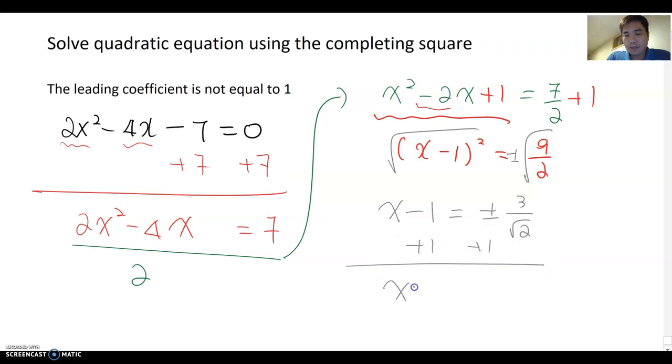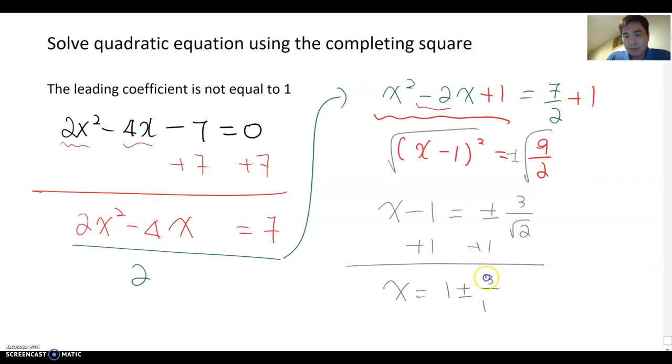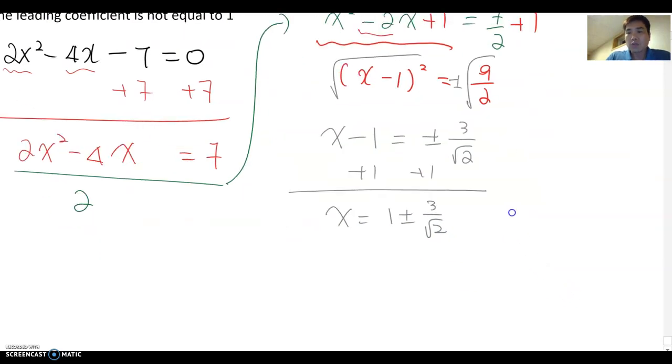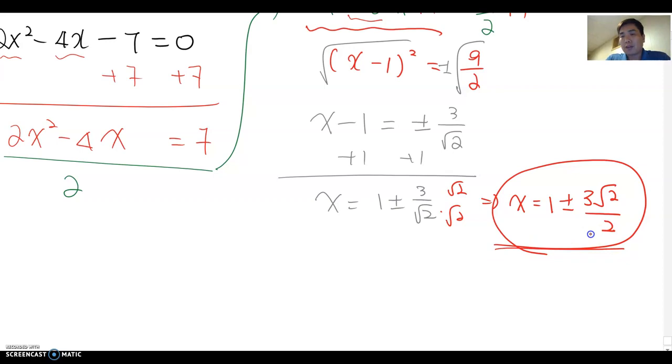Then x equal to 1 plus and minus 3 over root 2. But we usually don't write irrational values on the denominator, so just multiply root 2 on both numerator and denominator. Then x becomes 1 plus and minus 3 root 2 over 2. That will be the answer. The reason I don't go any further is because this is a rational term and this is an irrational term, so we cannot actually combine them. That should be the final answer.